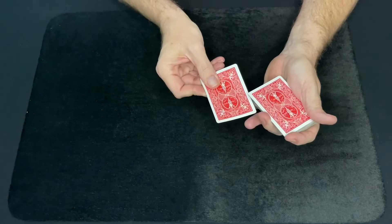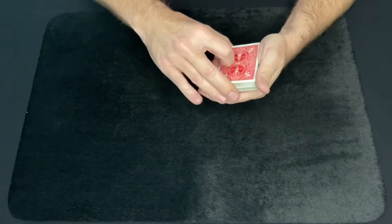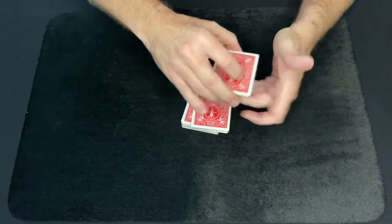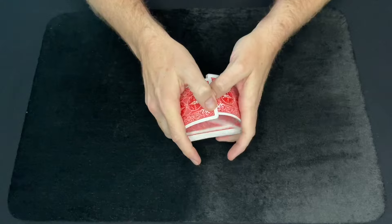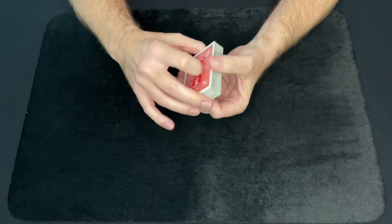You take their card, lose it somewhere in the middle of the deck. You have no idea where it is. You can give the deck a few cuts, even a nice shuffle. Completely losing the location of the card in the deck.